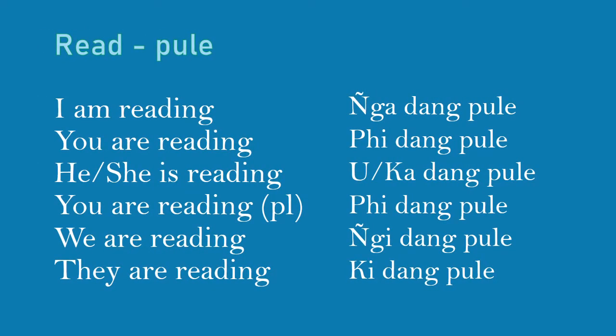Example with 'read' (PULE): I am reading — Nga DANG PULE. You are reading — Pi DANG PULE. He or she is reading — U DANG PULE or Ka DANG PULE. We are reading — Ngi DANG PULE. They are reading — Ki DANG PULE.